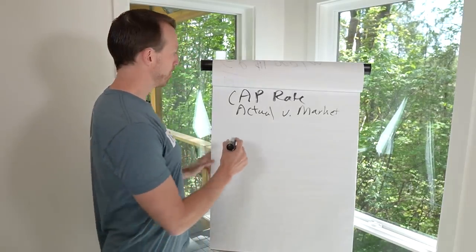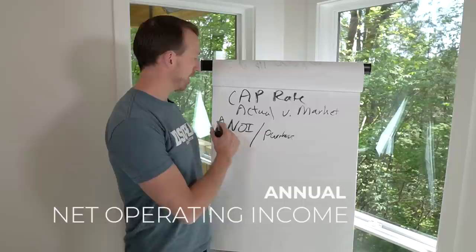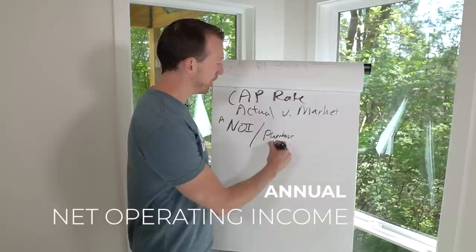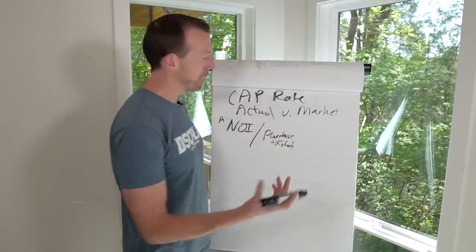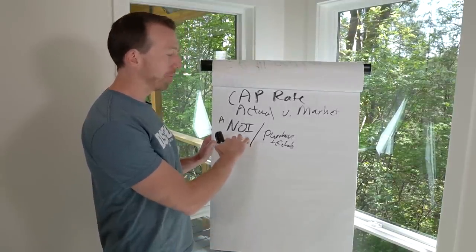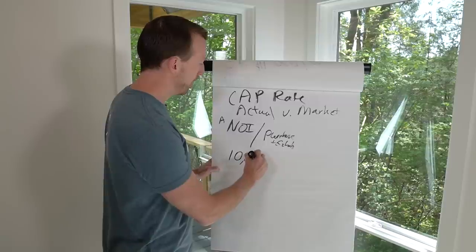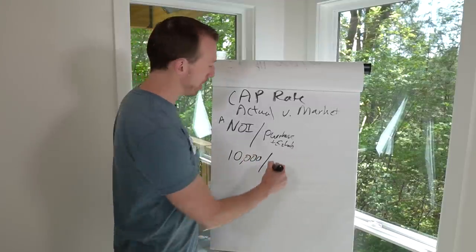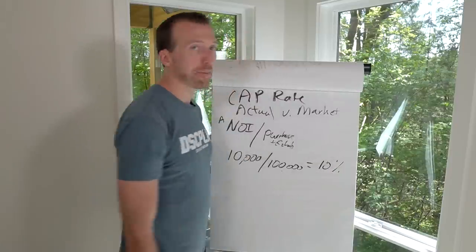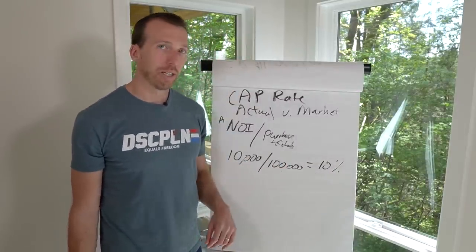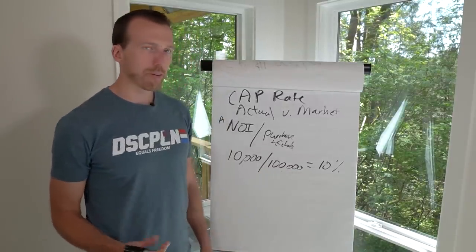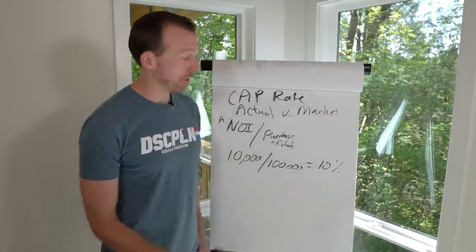Actual cap rate is your annual NOI divided by your purchase price — or purchase plus costs if you rehabbed it. So in this example: let's say you have an annual net operating income of $10,000 and the project cost you $100,000. That means your cap rate is 10% — that's a 10 cap. It looks similar to the actual cash on cash return but gets different depending on the type of deals you're doing. A 10 cap is a very good deal.